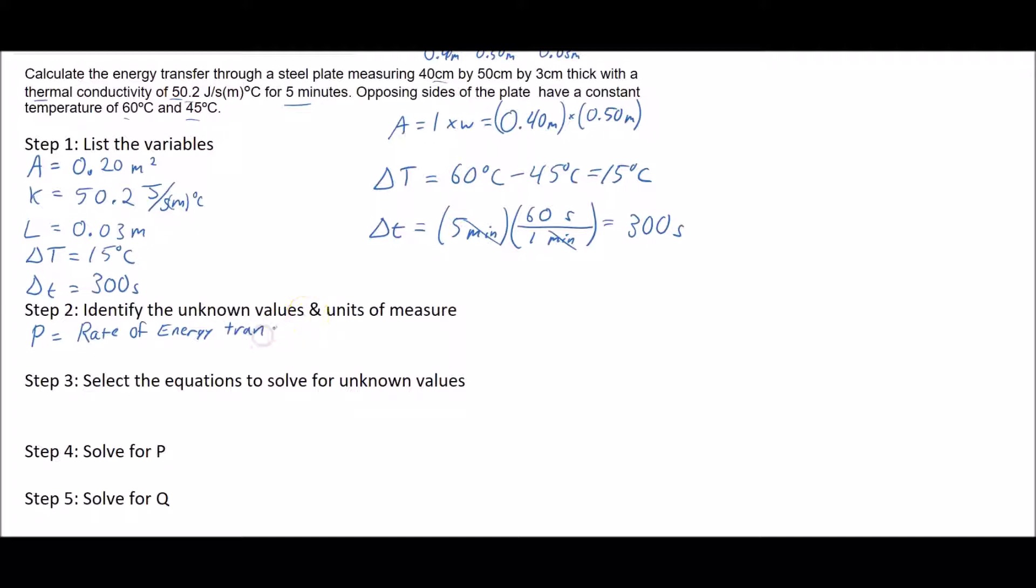We'll be finding capital P, which is the rate of energy transfer. In other words, what is the rate at which energy is being transferred through this steel plate, and that will be in watts. Whenever you have rate of energy transfer, that's how much energy per second, so it's always watts. Then we have the actual energy transfer, how much energy total, and that is measured in joules.